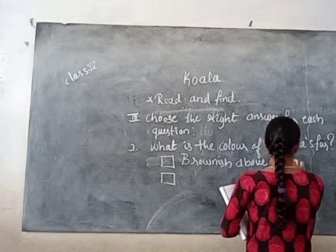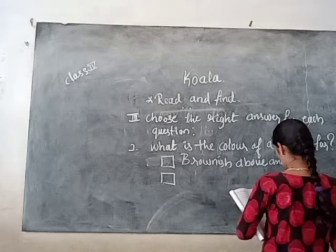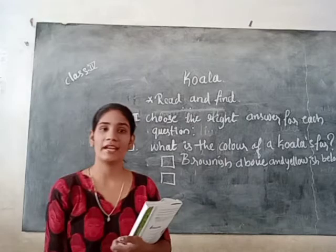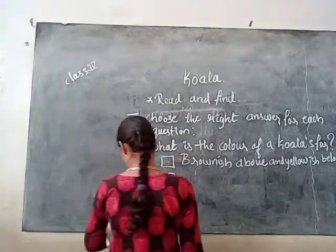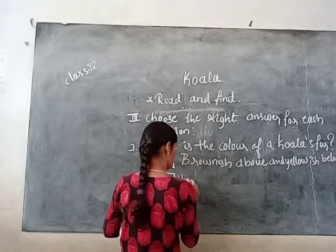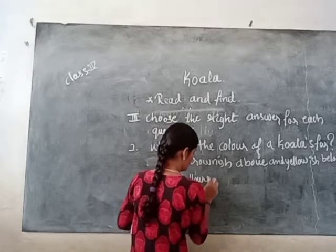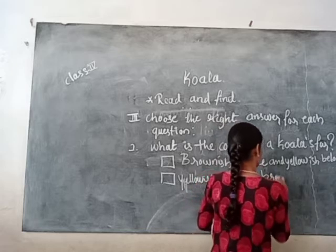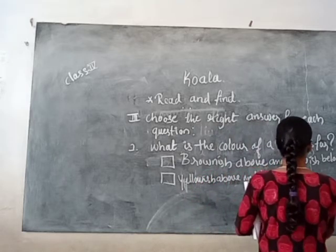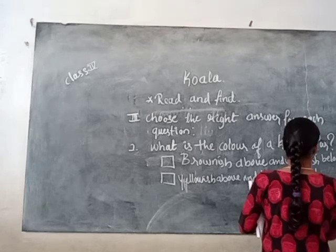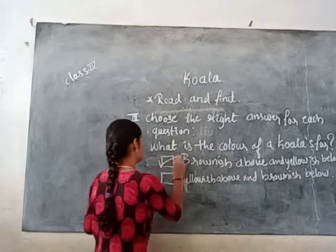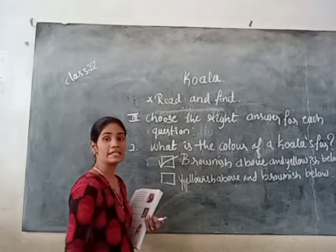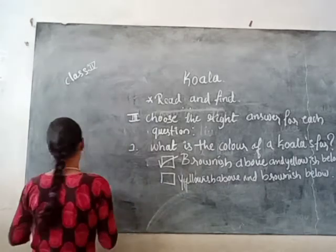The options are: yellowish above and brownish below, or brownish above and yellowish below. Which one is correct? The first one is correct — the color of the Koala's fur is brownish above and yellowish below.